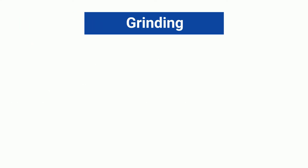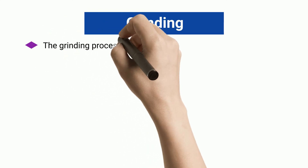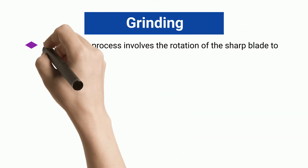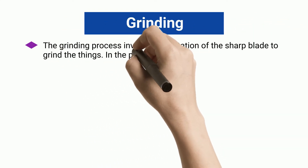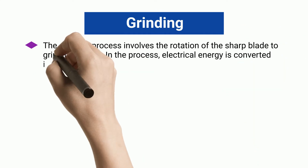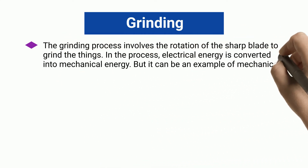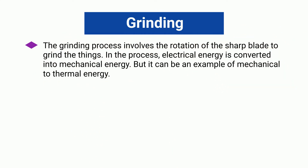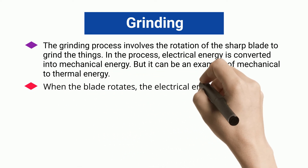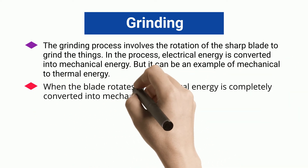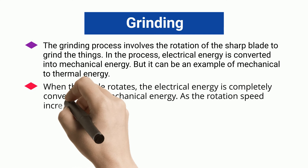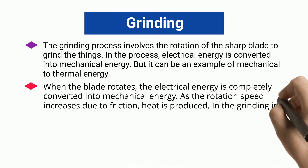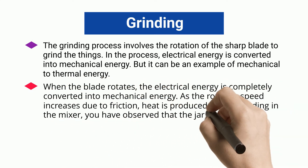Grinding. The grinding process involves the rotation of a sharp blade to grind things. In the process, electrical energy is converted into mechanical energy, but it can also be an example of mechanical to thermal energy. When the blade rotates, the electrical energy is completely converted into mechanical energy. As the rotation speed increases, friction causes heat to be produced.